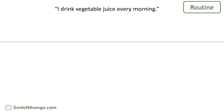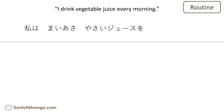Now let's talk about a simple routine — not a job, not a study, but something you do as a routine. Like this one: 'I drink vegetable juice every morning.' Let's say this is something you do every single morning for your health. You say 私は毎朝、野菜ジュースを飲んでいます。 The te-form of drink is 飲んでいます。That's how you say it. 私は毎朝野菜ジュースを飲んでいます。